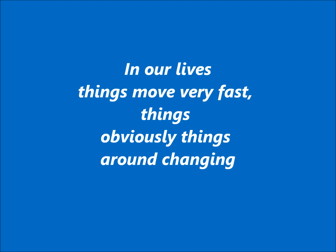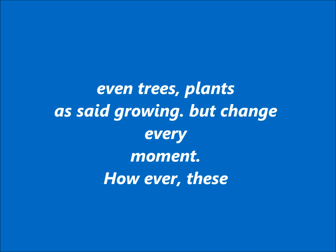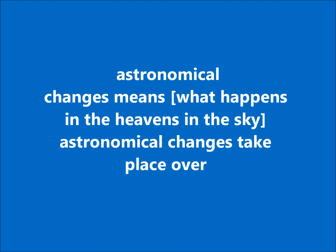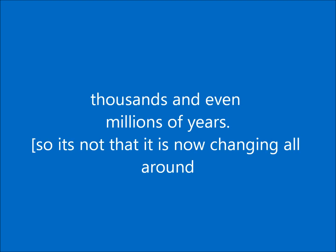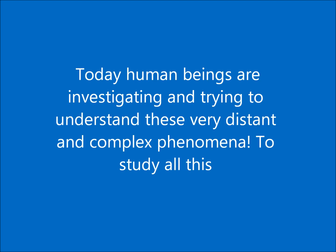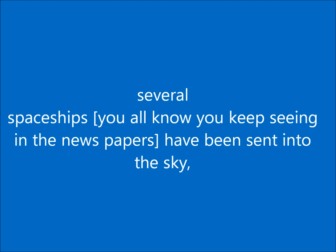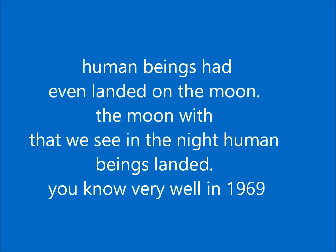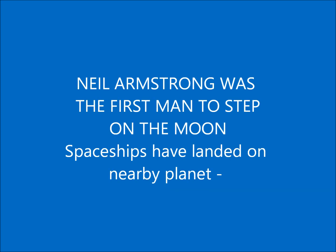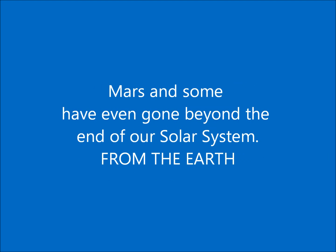In our lives things move very fast and change every moment. However, these astronomical changes — what happens in the heavens, in the sky — take place over thousands and even millions of years. Today human beings are investigating these very distant and complex phenomena. Several spaceships have been sent into the sky; human beings have even landed on the moon. In 1969, Neil Armstrong was the first man to step on the moon. Spaceships have landed on nearby planet Mars, and some have even gone beyond the end of our solar system.